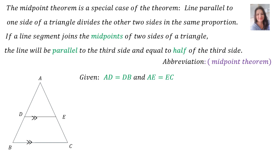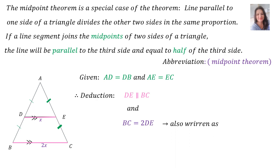Given that AD equals DB and AE equals EC, the deduction is that DE is parallel to BC, and BC is twice the length of DE. So if BC is 2X, then DE will be X. BC equals twice DE can also be written as half of BC equals DE.